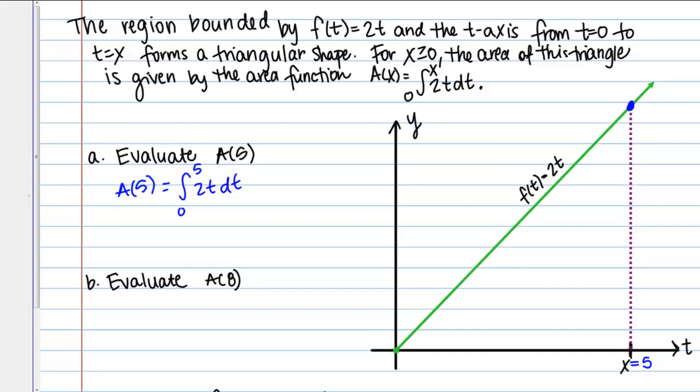I know this base is going to be 5, but what about the height? This function is 2t. Here I'm plugging in 5. It's kind of confusing maybe because there's an x and a t, but they kind of represent the same thing in that they're both values along this horizontal axis.